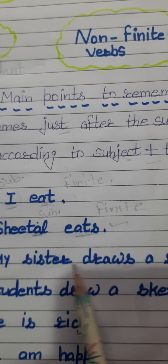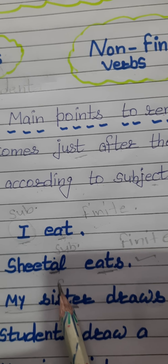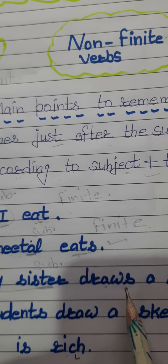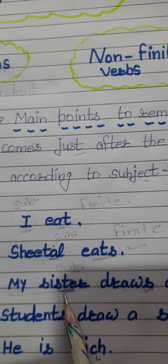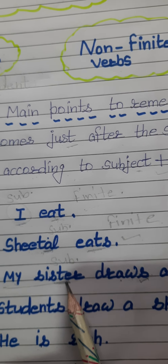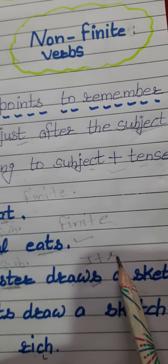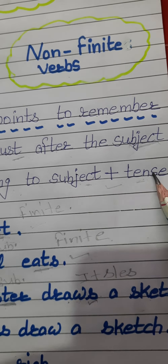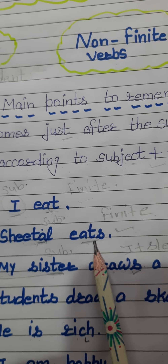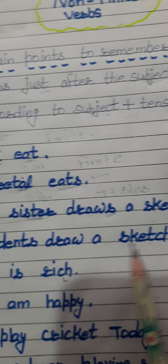In 'My sister draws a sketch,' 'my sister' is the subject and 'draws' is the finite verb. Because we have a singular subject, we apply the first form plus 's' or 'es.' So we see that the finite verb changes according to the subject or the tense. If the subject is singular, we apply first form plus 's' or 'es.'